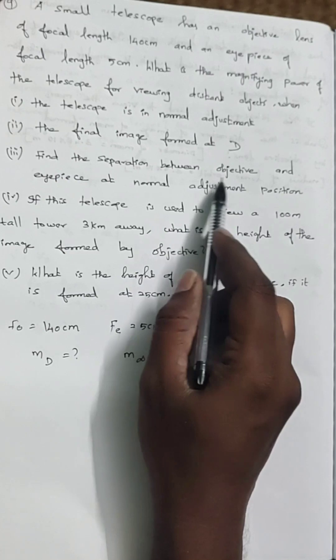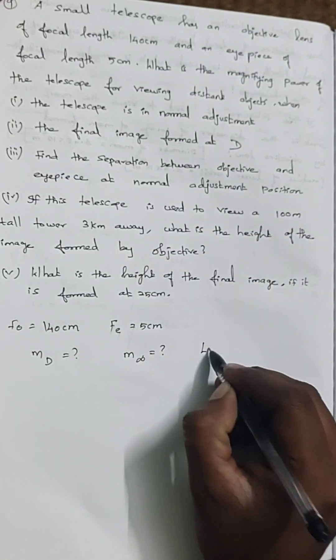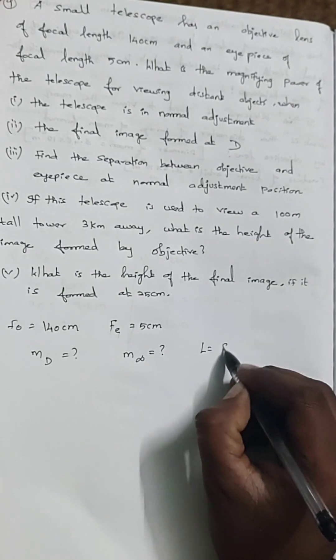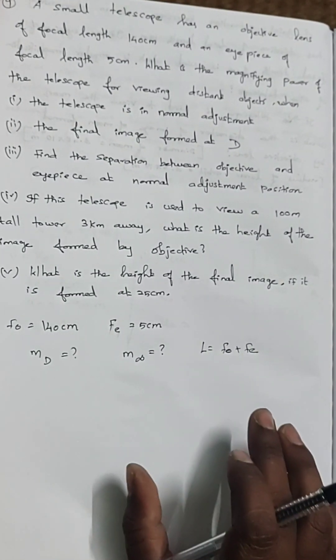At normal adjustment position, what is the formula for l? It is f_0 plus f_e. Very easy thing, with the given values you can answer this.